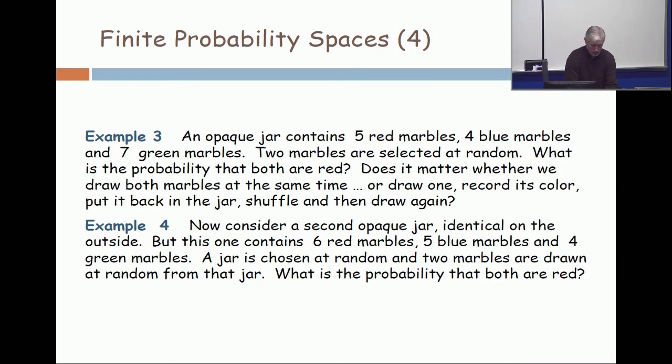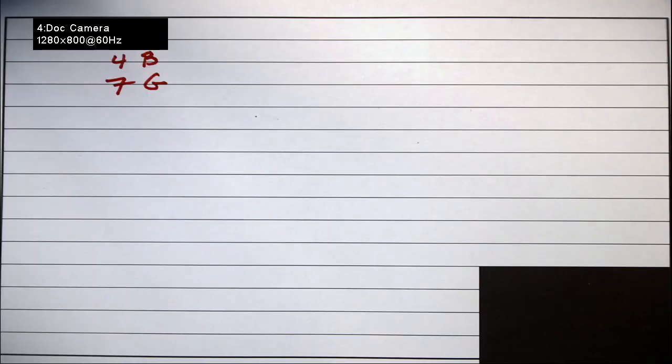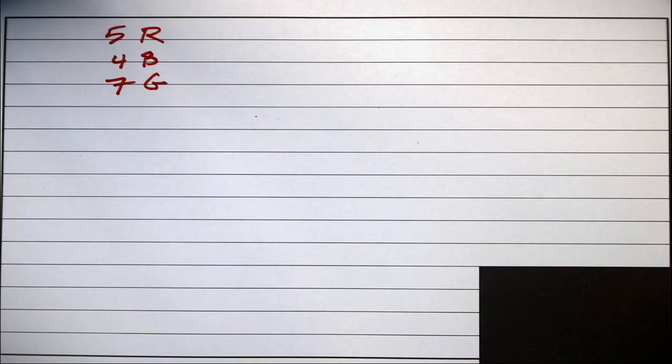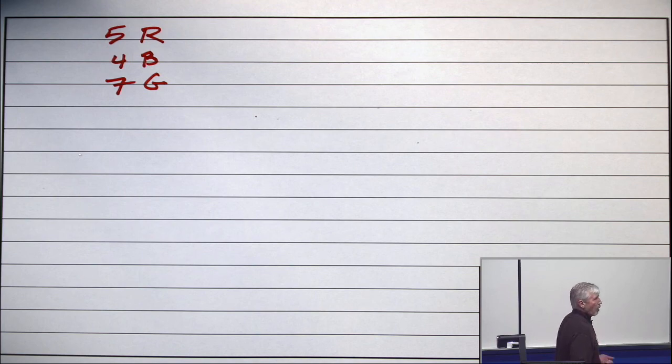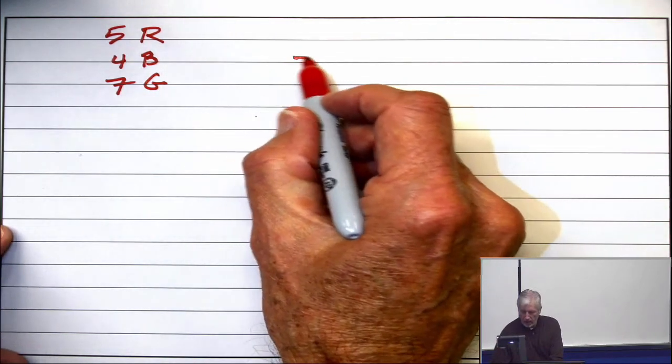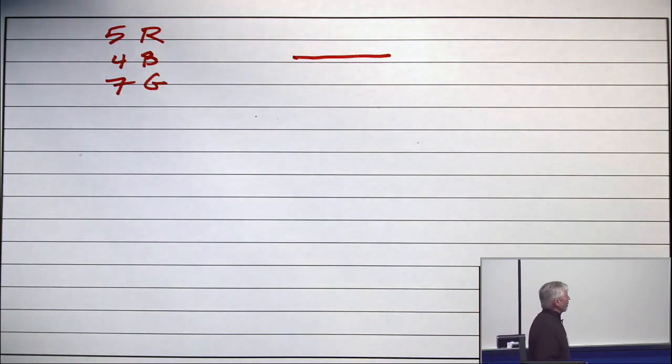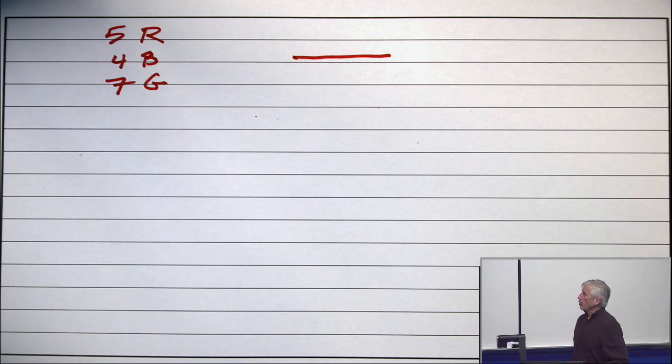So the question is if I draw out two, what's the probability that they are both red? So how many ways to draw out two marbles? I'm going to get a denominator. And the total number of marbles is 16, 5 plus 4 plus 7, that's 16.